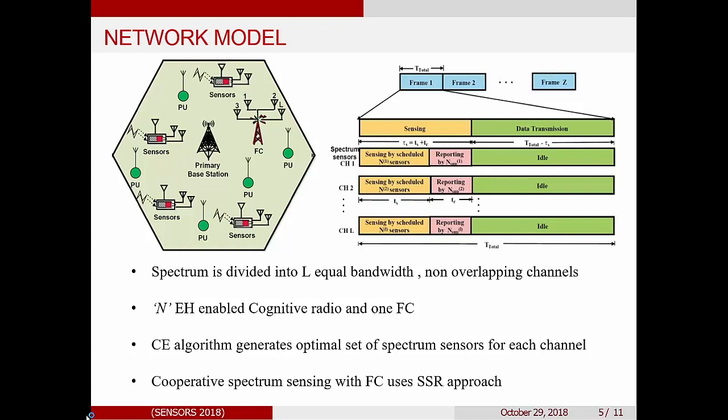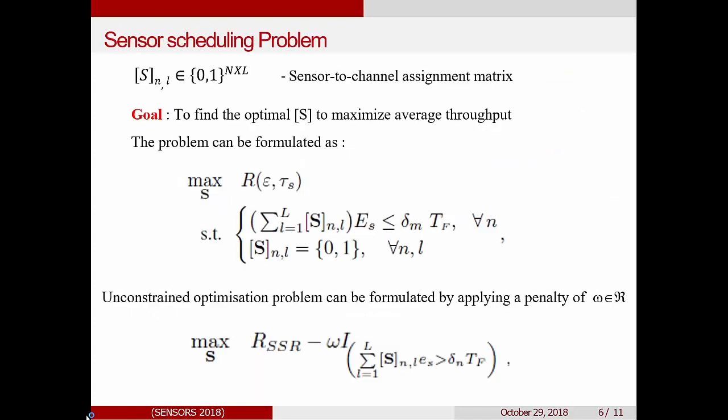Now we have, since we are talking about multiple channels, we have L number of channels and we have N number of spectrum sensors. So our job now is to form the sensor to channel assignment matrix. So in getting this matrix, the main goal is to maximize the overall throughput and at the same time, keeping in mind the energy constraints.